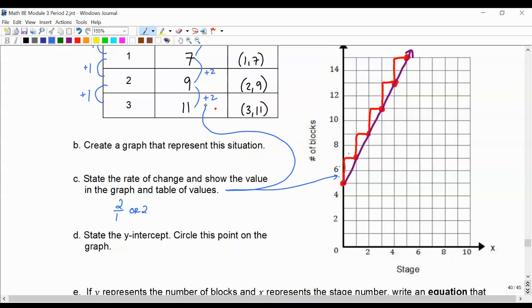And we also found it in our table. It was up 2, that was our rise, and up 1, which was our run. So we rose 2 and we ran 1, which corresponds to what's in the graph.